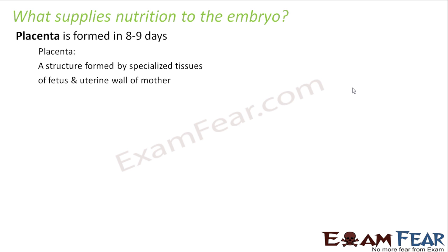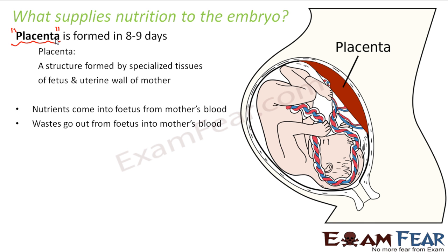There is a specialized structure called the placenta, which is formed in 8 to 9 days. In 4 to 5 days the embryo starts moving towards the uterus, and in a total of 8 to 9 days this specialized structure — the placenta — is formed. It is formed by specialized tissues of the fetus and the uterine wall of the mother. All nutrients come into the fetus from the mother's blood through this placenta, which acts as a connection between the mother's body and the fetus.